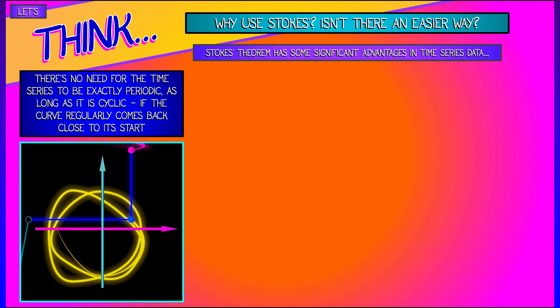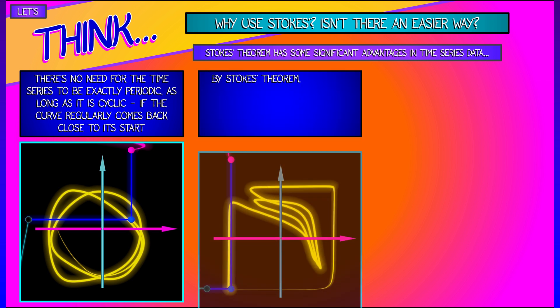First of all, there's no need for the time series to be exactly periodic, as long as the system is cyclic, as long as this curve in the n-dimensional space comes back close to its start point, regularly. Then that's fine. We can just approximate it with a closed curve and then apply Stokes' theorem, integrate over that curve in n dimensions. Now, that might be really useful for data that is not perfectly periodic.